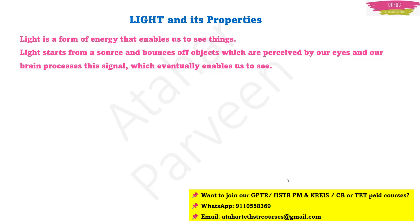What is light? Light is a form of energy that enables us to see things. How are we able to see things? When light starts from a source and bounces off objects, our eyes perceive the light and our brain processes the signal, which eventually allows our eyes to see things.